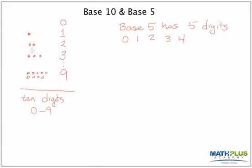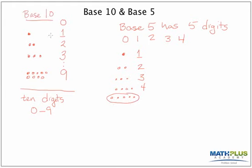As I'm counting the same dots in base five, I'd still call this one dot, two dots, three, and four. But here's where it gets interesting: when I get to five dots, I don't have the number five — I'm not allowed to use that digit. So I group them into a bundle of five, the same way that in base ten I grouped things when I got to ten. I call this one group of five and zero units — so now this becomes my fives column, and this is my units column.